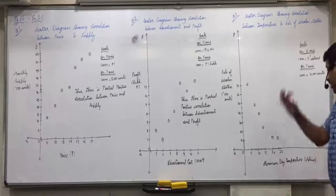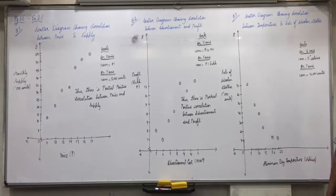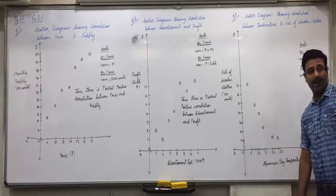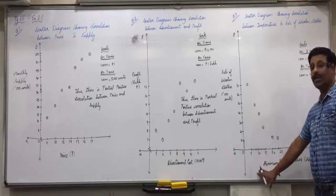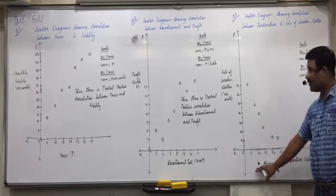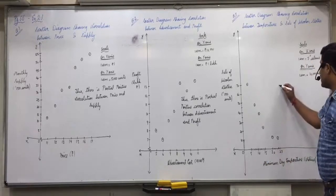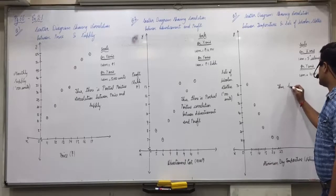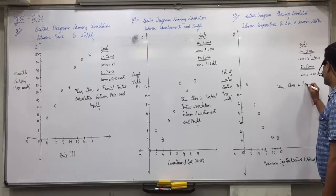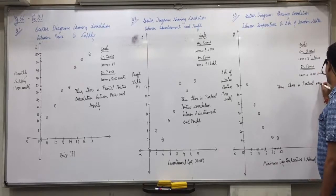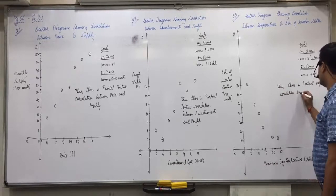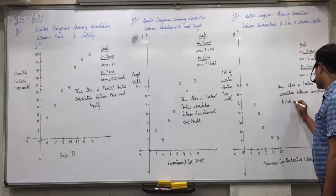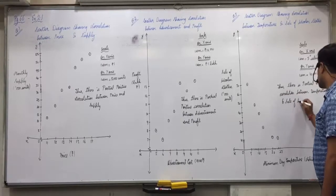The diagram shows partial negative correlation — it is not a perfect straight line, so it is partial, not perfect negative. Write below: 'There is partial negative correlation between temperature and sale of woolen clothes.'